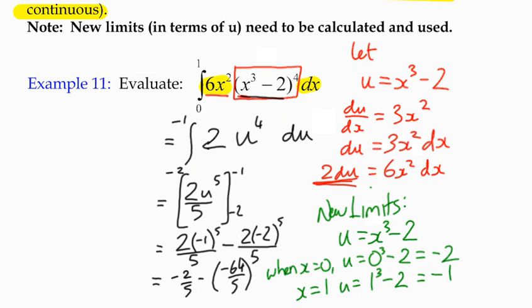Minus negative 64 fifths. Negative 2 fifths plus 64 fifths is 62 fifths.